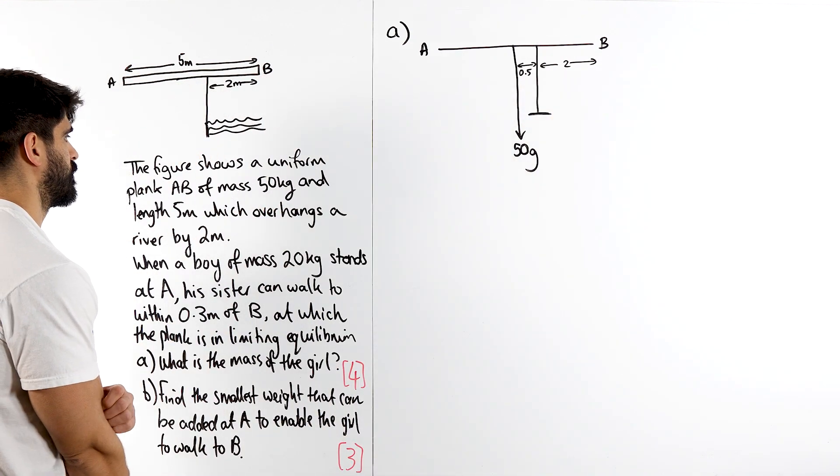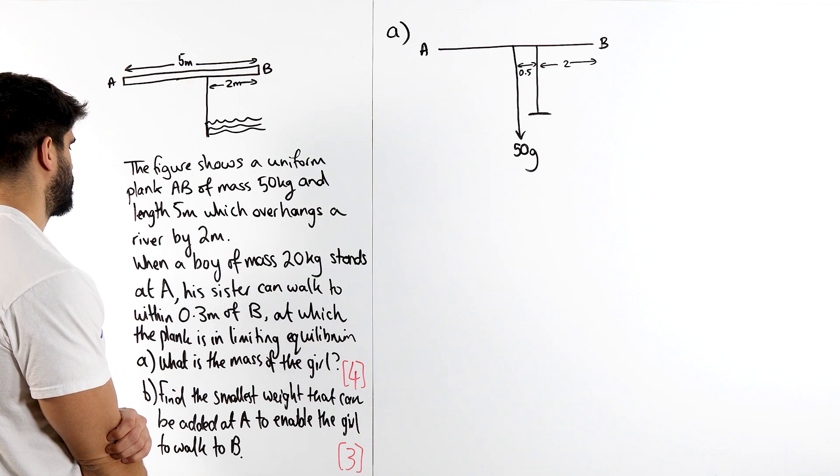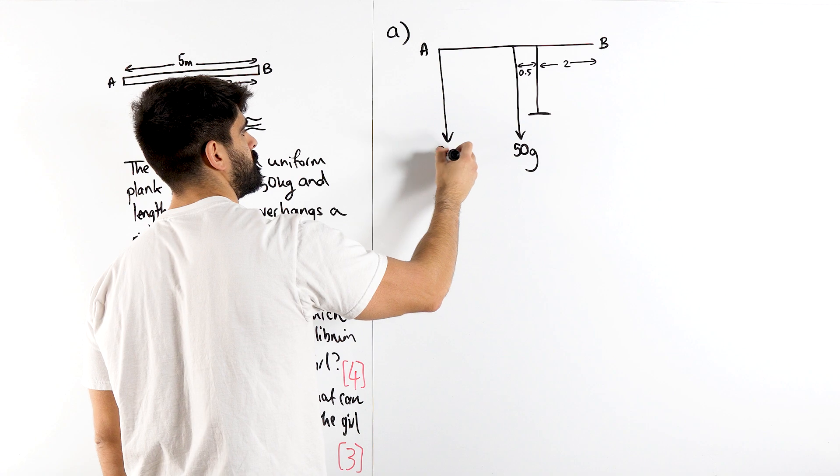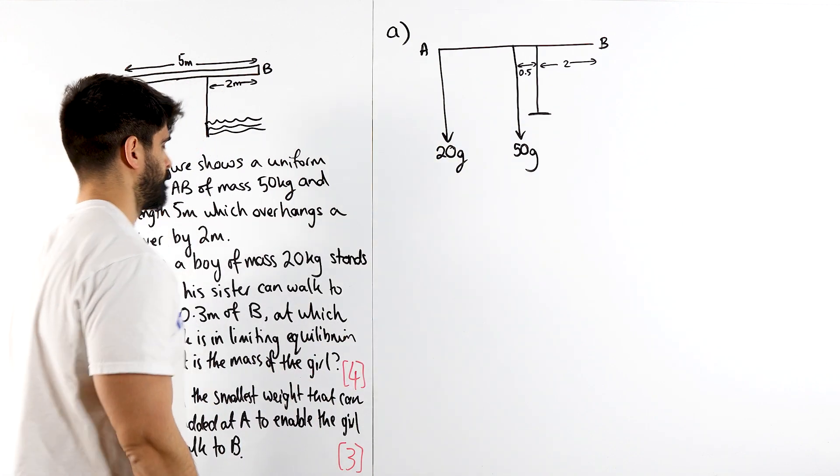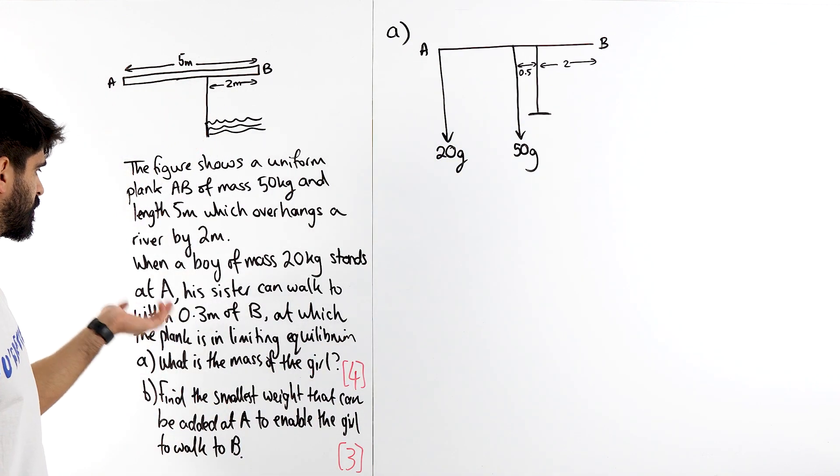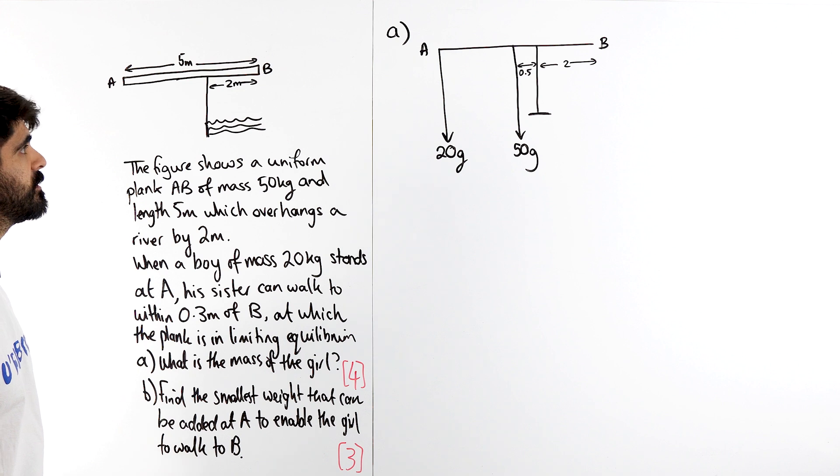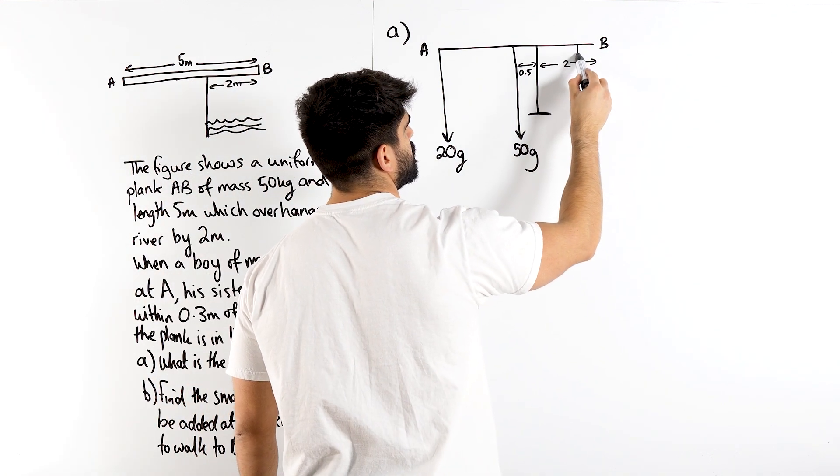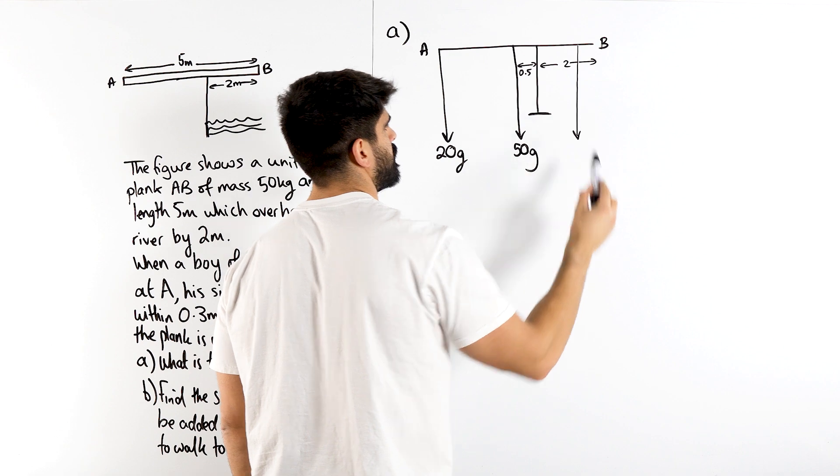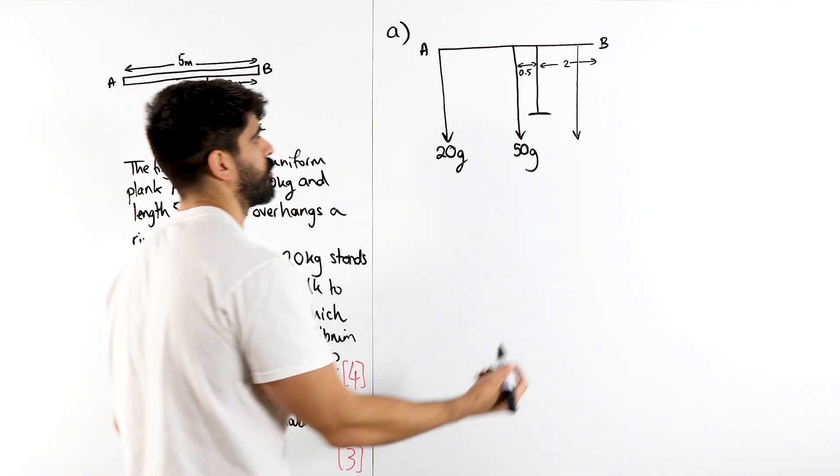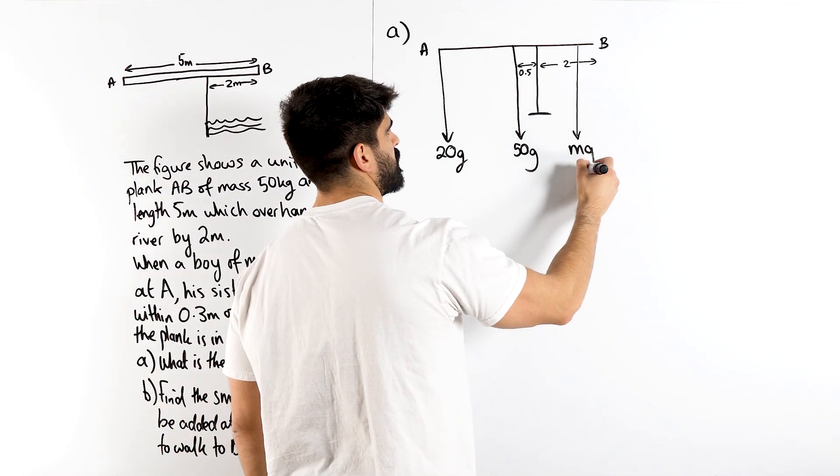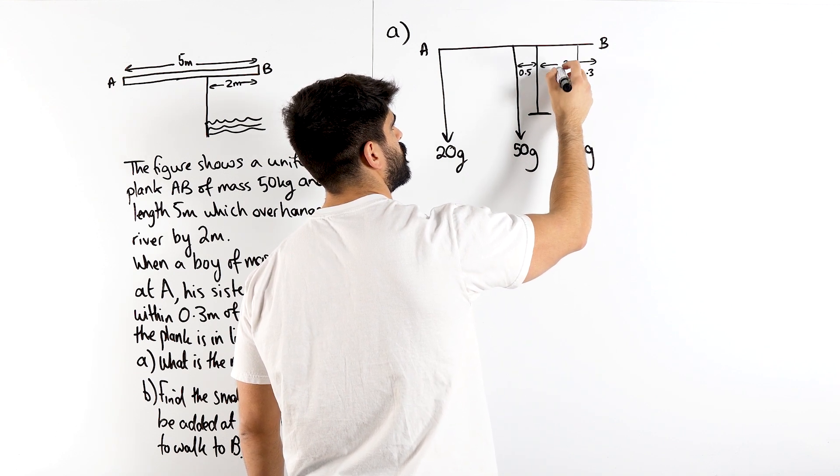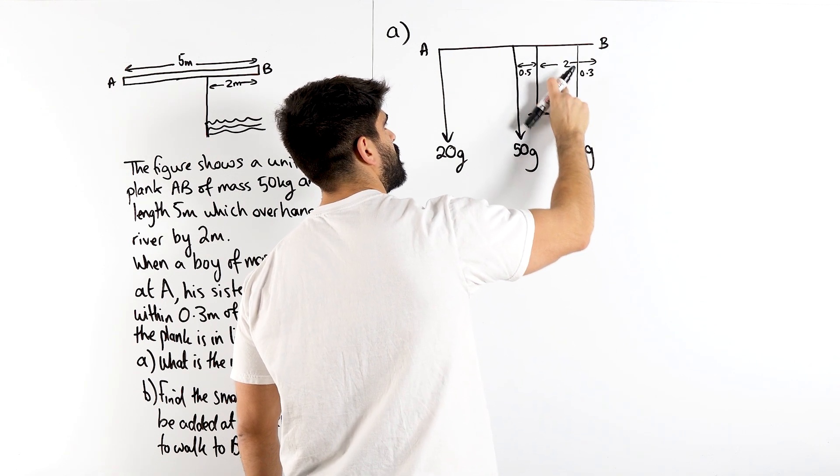We've got a boy of mass 20 kg standing at A, so here we have 20G. And this girl can walk to within 0.3 meters of B, so 0.3 meters this way. We're trying to find the girl's mass, so we'll call her M, but then we have to say G. So this is 0.3 and this would be 1.7 on the other side.